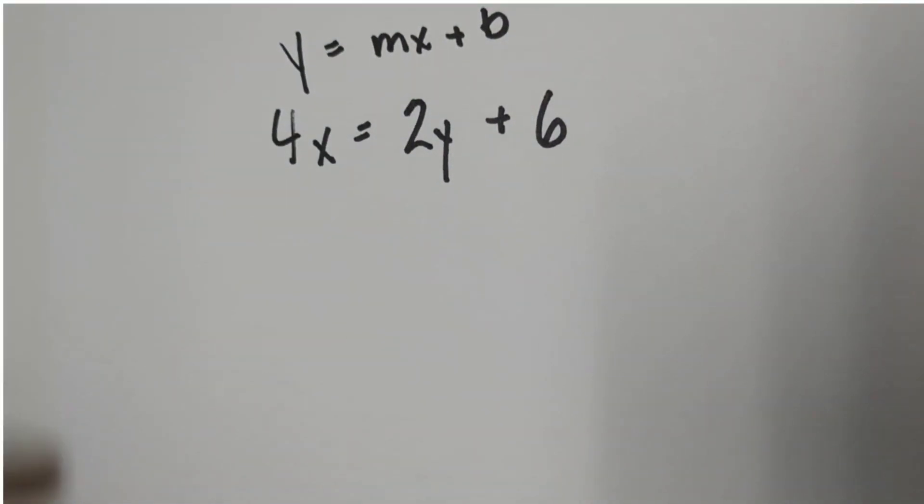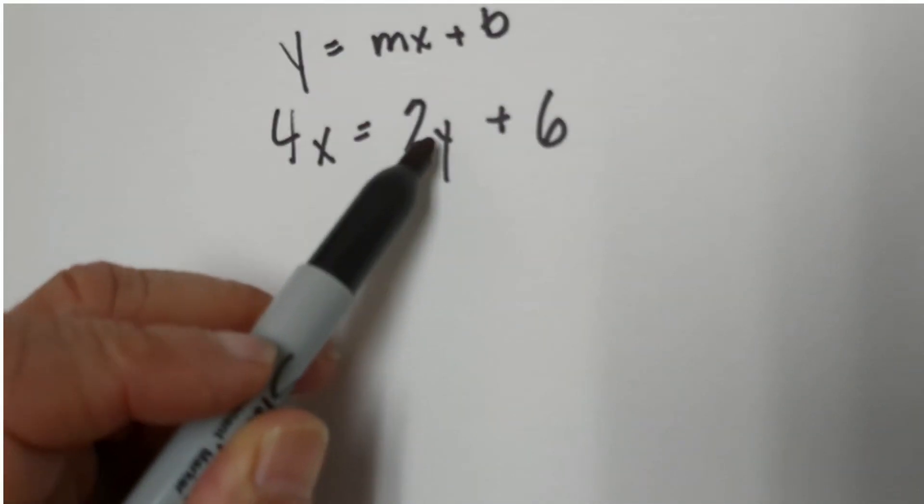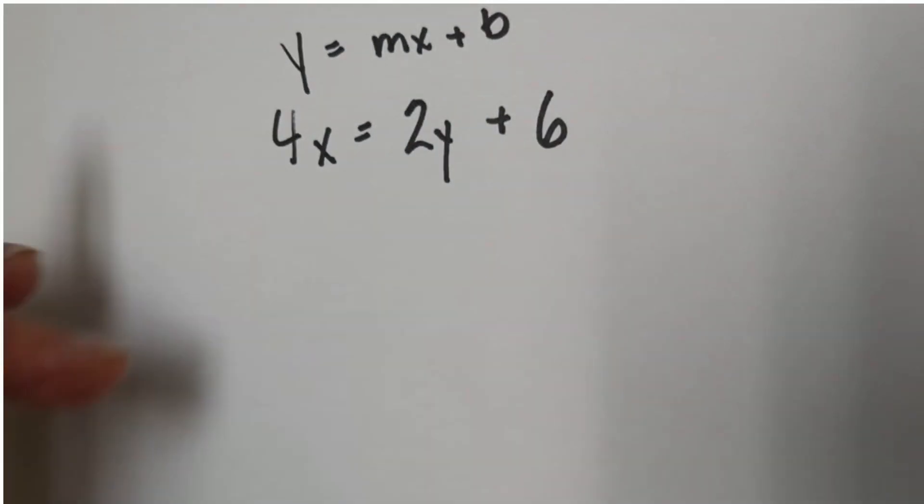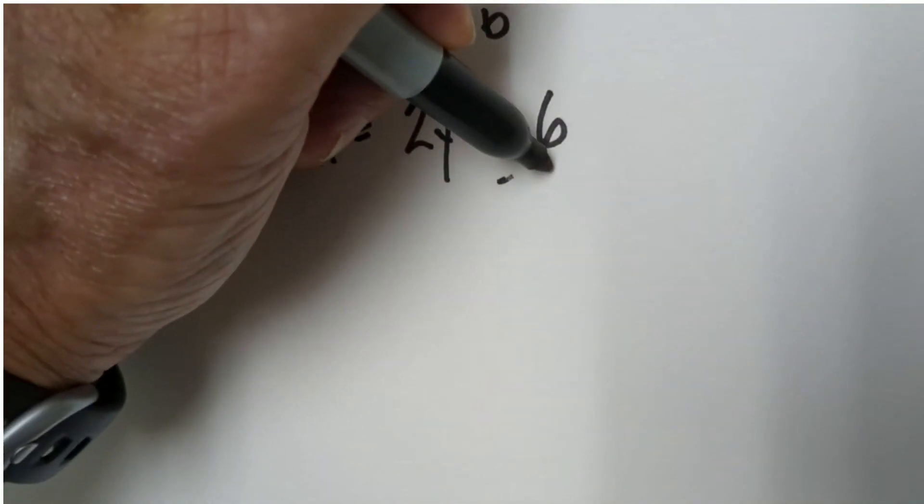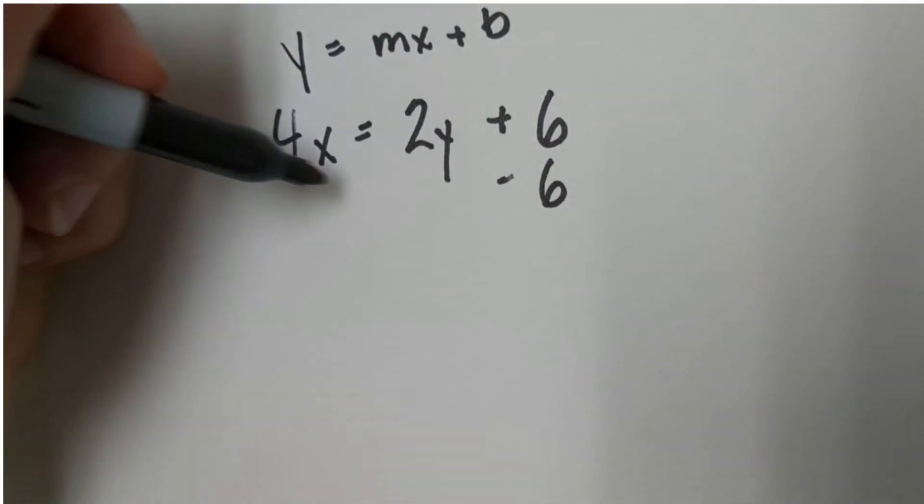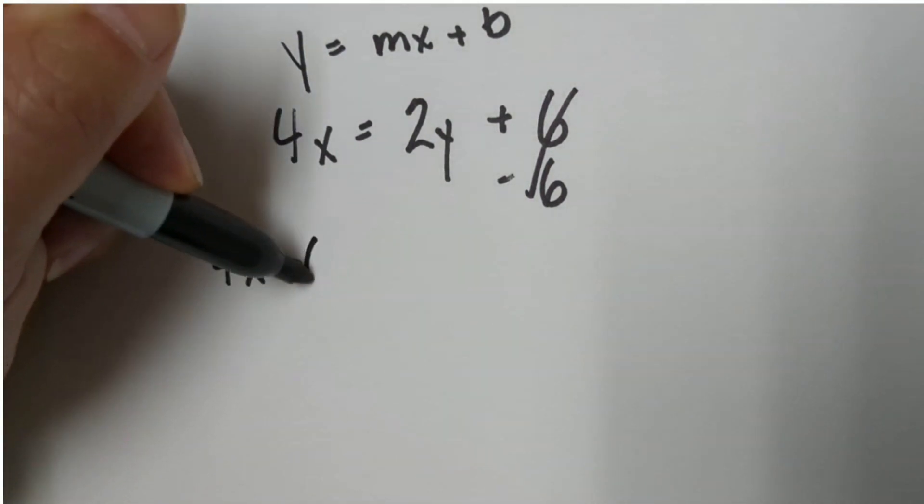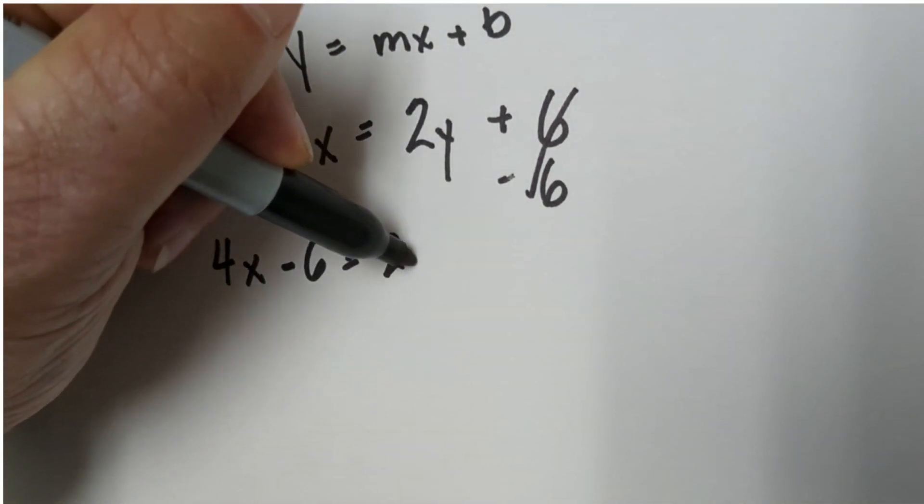So let's see what we have here. We have a y and a 6 on this side, so we need to get the y by itself. We can first move the 6 to the other side by subtracting 6 because it's an opposite operation. These will cancel. So we have 4x minus 6 equals 2y.